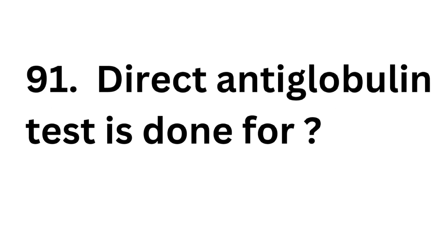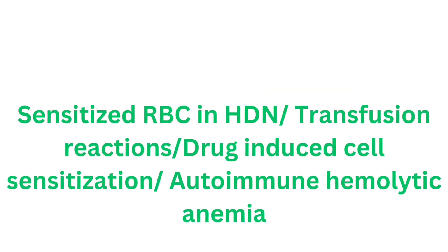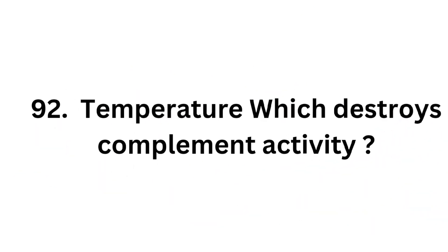Question number 91: Direct anti-globulin test is done for what? The direct anti-globulin test is done to detect sensitized RBCs in hemolytic disease of the newborn (HDN), transfusion reactions, drug-induced cell sensitization, and autoimmune hemolytic anemia.